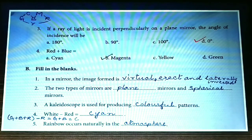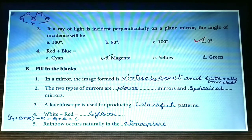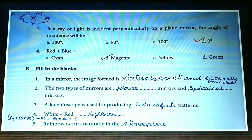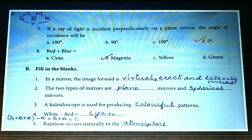White minus red: from our mnemonic we know green plus blue plus red equals white. Therefore, white minus red equals green plus blue plus red minus red, which leaves green plus blue. And green plus blue equals cyan. Also: rainbow occurs naturally in the atmosphere.